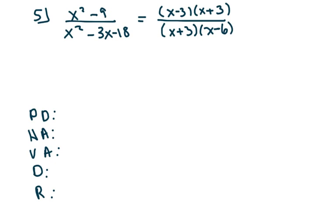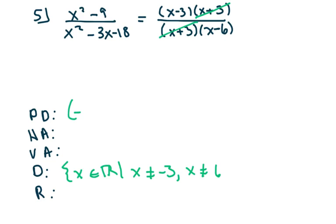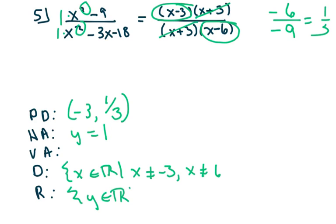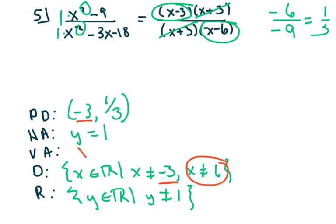Next one. The domain is everything, but x cannot be negative three and x cannot be six. We do have a point of discontinuity at negative three. When I plug it into my reduced equation, I get negative six over negative nine, which equals one-third. The degrees are the same, so I divide the lead coefficients — y equals one. That means the range is everything but y cannot be one. My vertical asymptote is x equals six, since we have a point of discontinuity at x equals negative three.